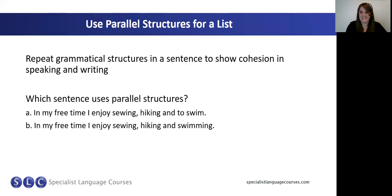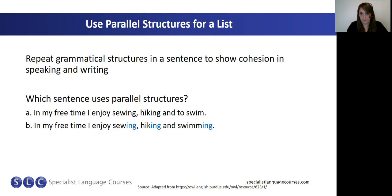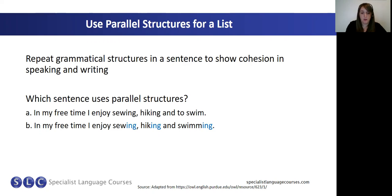Sentence B, as you've identified, is the sentence with parallel structures. We have a repetition of the -ing form: I enjoy sewing, hiking and swimming. Although we can say I enjoy to swim, it sounds unusual if the two other verbs we have previously are -ing forms.